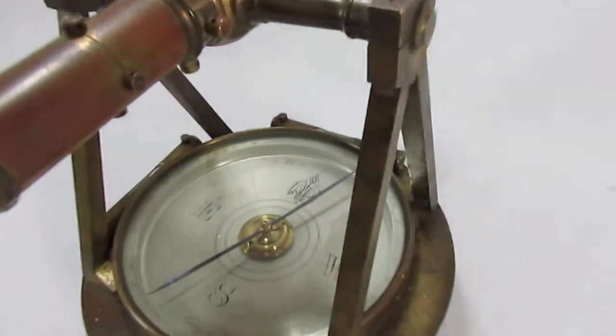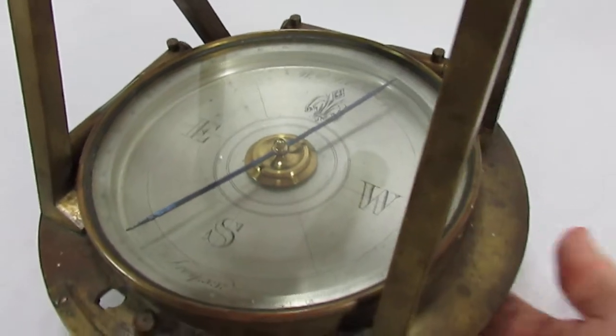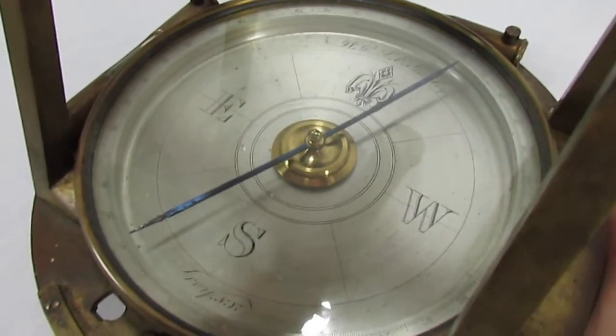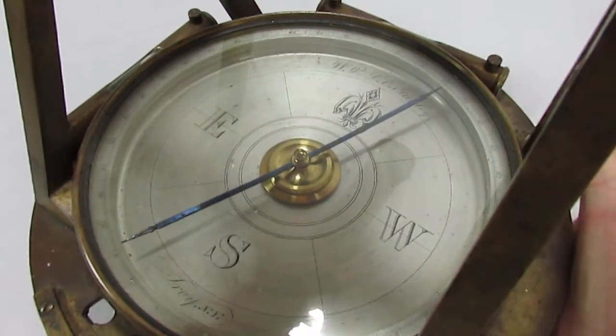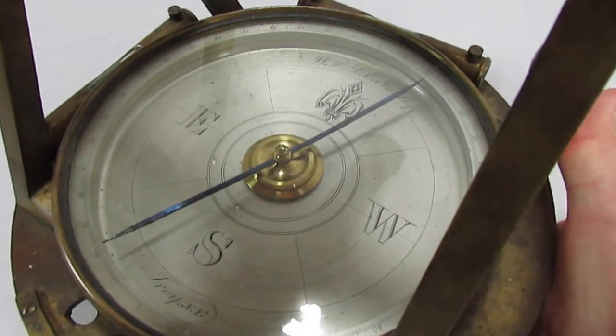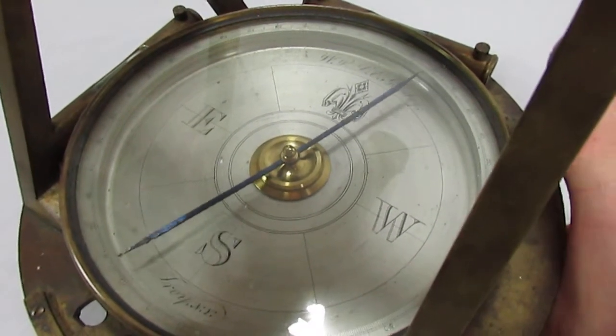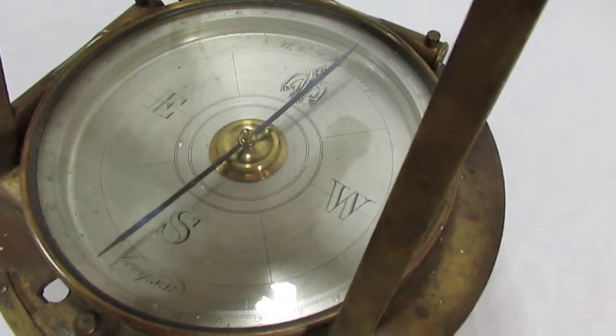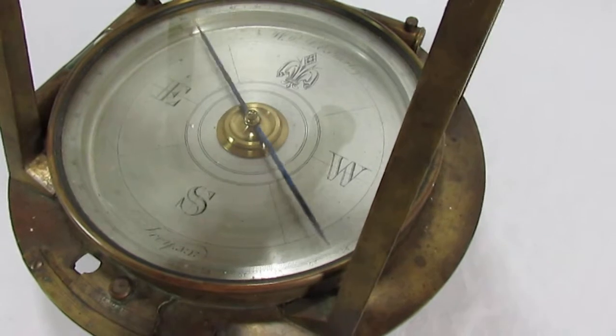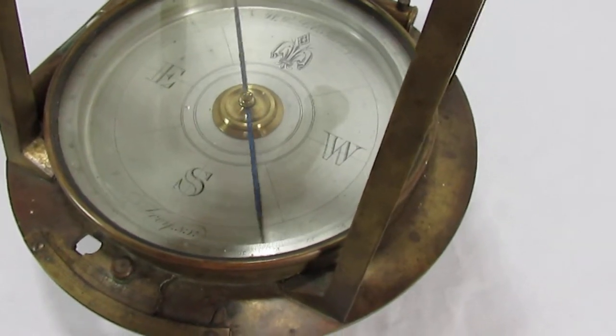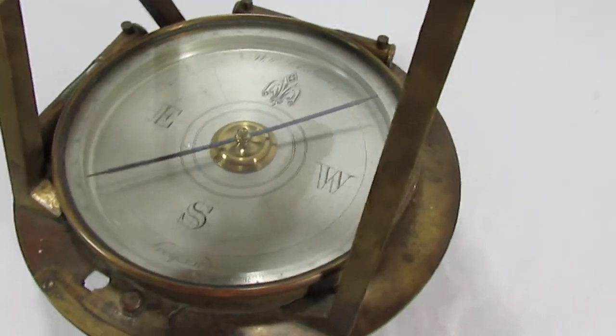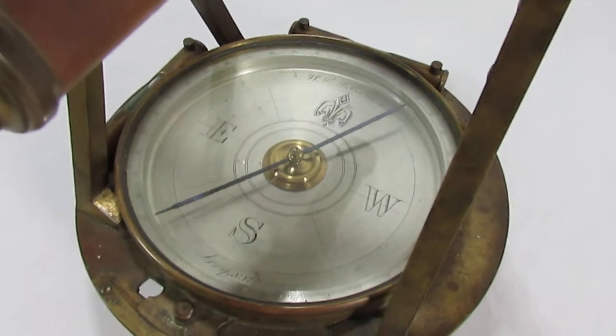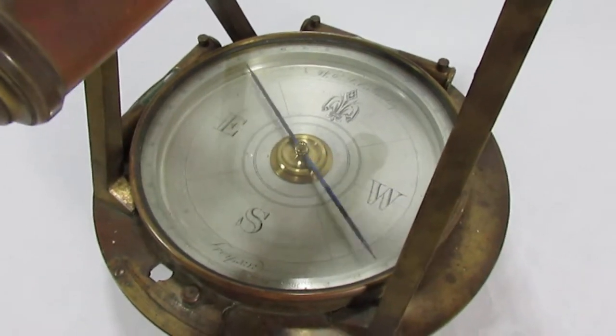Then there is a neat feature underneath, there is a tension knob to release the tension on the compass needle. And as soon as we do, give it a second here, you'll see that that compass is going to point towards true north once it settles down.